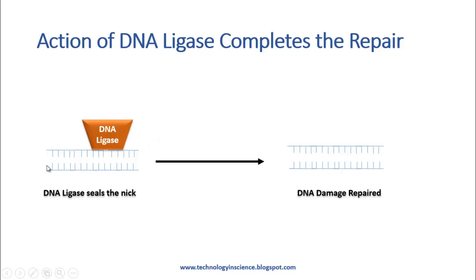Once the complementary nucleotides have been added, the nick region needs to be sealed. The nick is sealed by another enzyme called DNA ligase, which completes the repair process and the DNA damage is repaired. This is how the nucleotide excision repair mechanism works, using the example of thymine dimer removal in E. coli. In humans, the process is a little more complex, which will be covered in a later video.